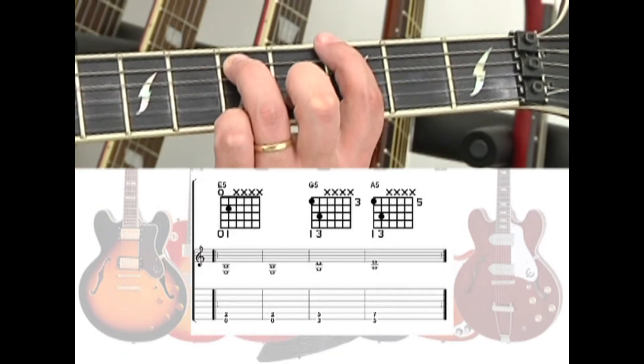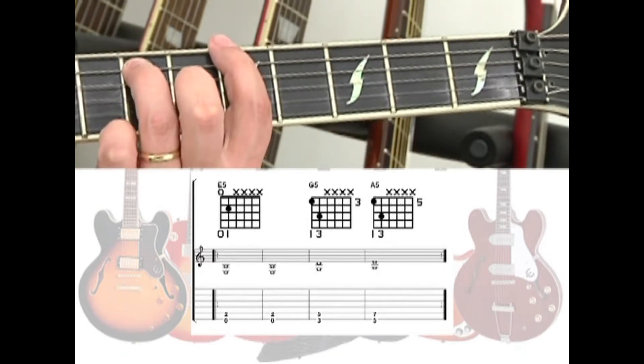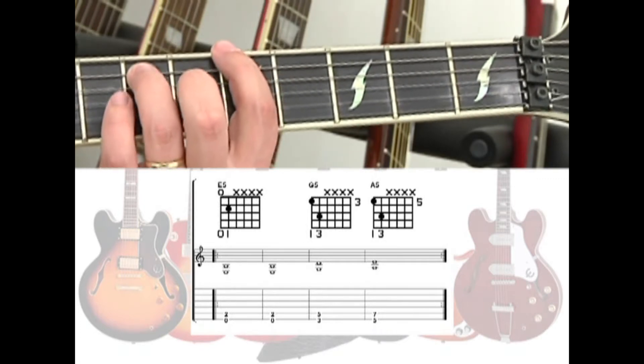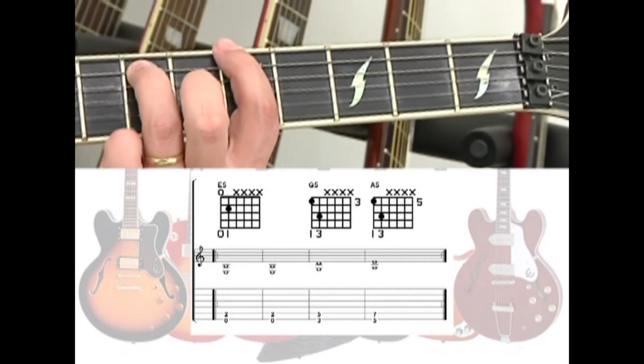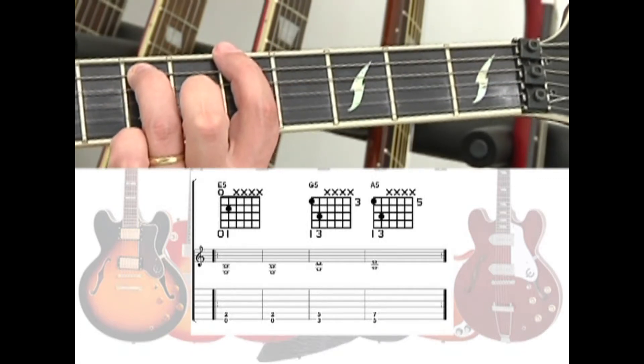Then we move it up two frets for an A5, 6th string 5th fret and 5th string 7th fret for one measure. One, two, three, four.